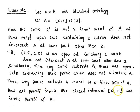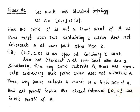But all points inside the closed interval [0,1] are limit points of A. If you take any point in [0,1], including endpoints 0 and 1, for example 0, any open interval containing 0 intersects this closed interval at some point other than 0. For instance, the open interval (−0.5, 0.5) contains 0 and intersects [0,1] at many points other than 0. Similarly, any open interval around endpoint 1 intersects [0,1] at some point other than 1. So these endpoints 0 and 1 are limit points of A.